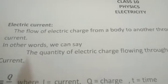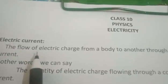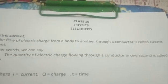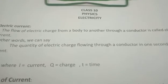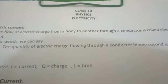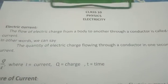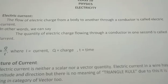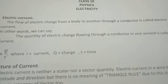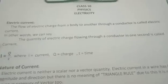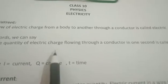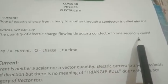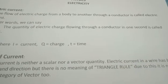Let me define the word electric current. It can be defined as the flow of electric charge from one body to another. That means if a charge is flowing from a body to another through a conductor, that will be known as electric current. Here charge means the negative charge — whenever a negative charge flows in a body, we will say that electric current is flowing. In other words, we can also define current as the quantity of electric charge flowing through a conductor in one second.